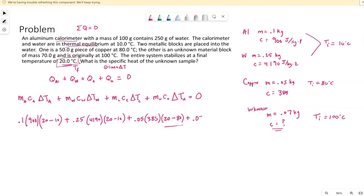This unknown material, we're looking for this C, this specific heat. Final temperature of 20, the initial temperature here was 100. So this all needs to add up to be zero.